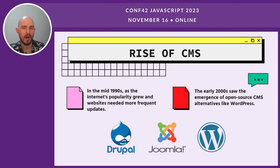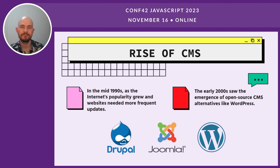However, all those were proprietary and closed source, which was typical for that era. But in the early 2000s, we saw the emergence of open source CMS alternatives like WordPress, Drupal, or Joomla. In the case of WordPress, for example, it comes with a set of plugins, templates, and many other tools that allow users to create websites without knowing CSS or HTML.